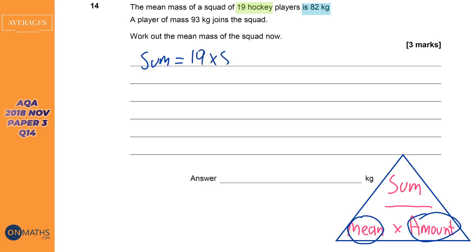Now thankfully this is a calculator paper so I'll get out my calculator and bung it in. There we are 1558. Now it says a player of mass 93 has joined the squad. Okay so new assignment. I always encourage my students to show the examiner what it is they're working out.